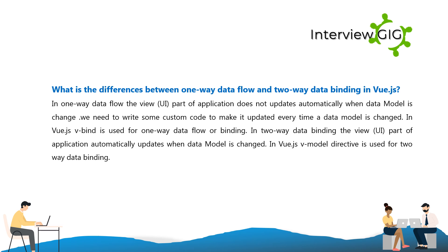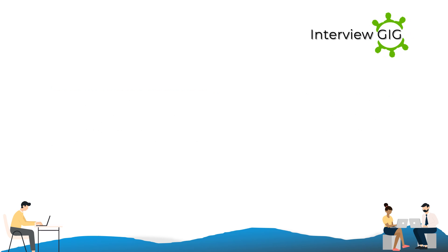What is the difference between one-way data flow and two-way data binding in Vue.js? In one-way data flow, the view (UI) does not update automatically when the data model changes — you need to write custom code to update it. In Vue.js, v-bind is used for one-way data flow. In two-way data binding, the view automatically updates when the data model changes. In Vue.js, the v-model directive is used for two-way data binding.